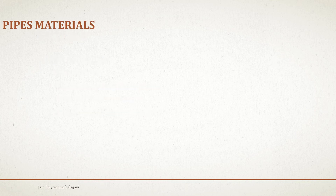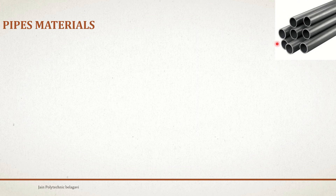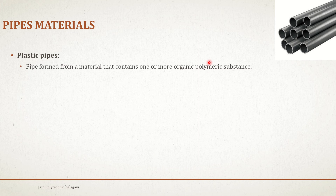First we'll start with pipe materials. The first type is plastic pipes. We usually use these in sewer line connections. Nowadays they have been discouraged by the government for water supply layouts. Plastic pipes are formed from a material that contains one or more organic polymeric substances.